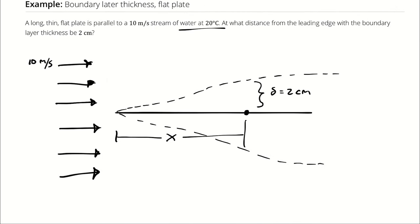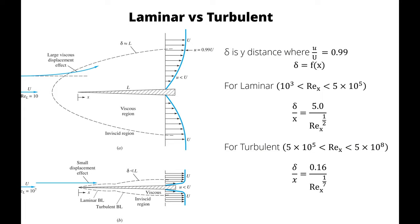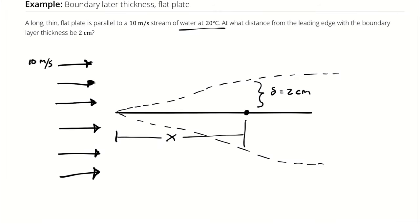We recognize that we have developed equations for the boundary layer thickness for laminar and turbulent flow. We're going to use a delta of 2 centimeters, figure out the Reynolds number at our position, and solve for x. The real question is: do we use the laminar equation or the turbulent equation? We don't have enough information to determine if the flow is laminar or turbulent at that position, so we're going to have to make a guess and check. Let's start by guessing laminar flow.